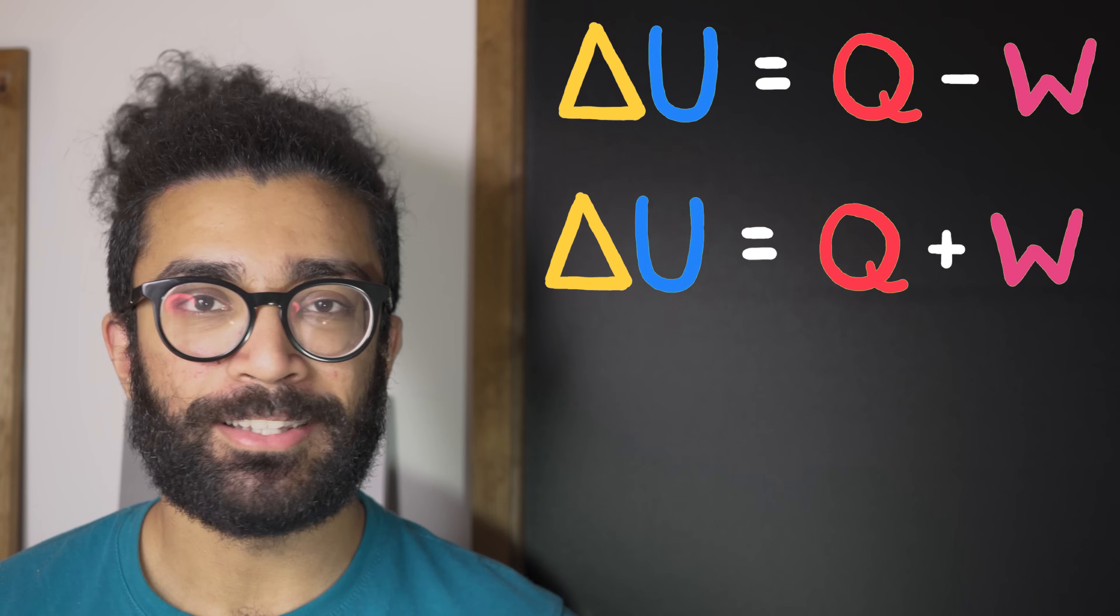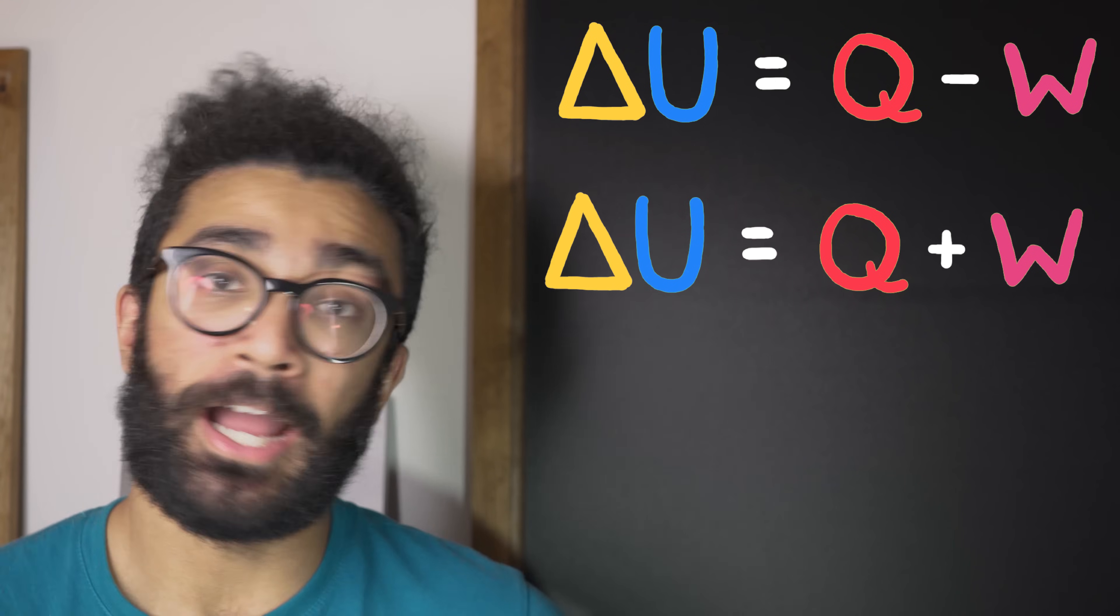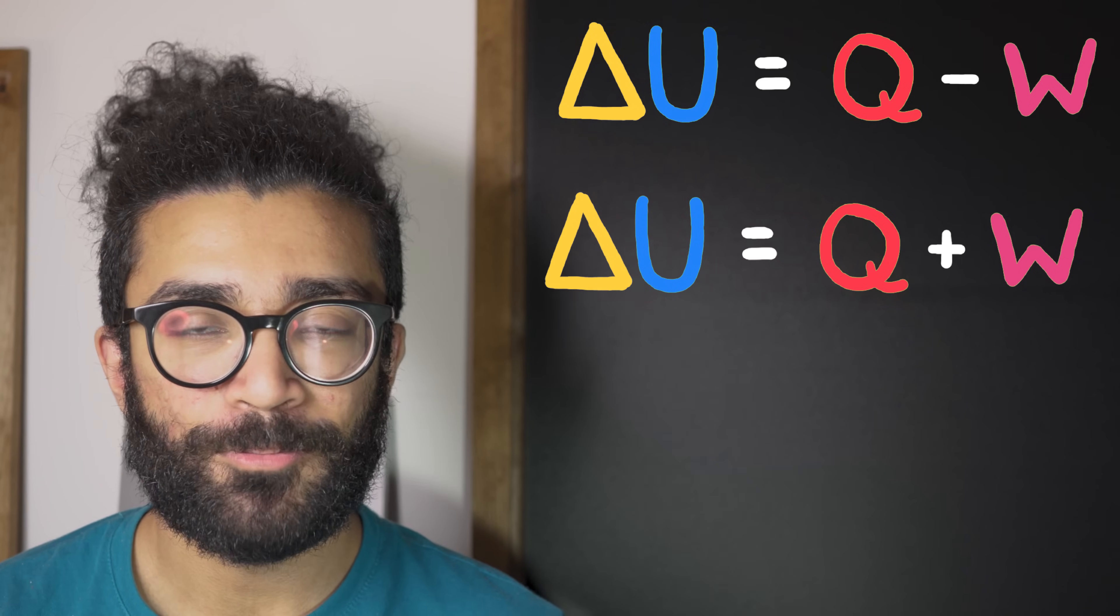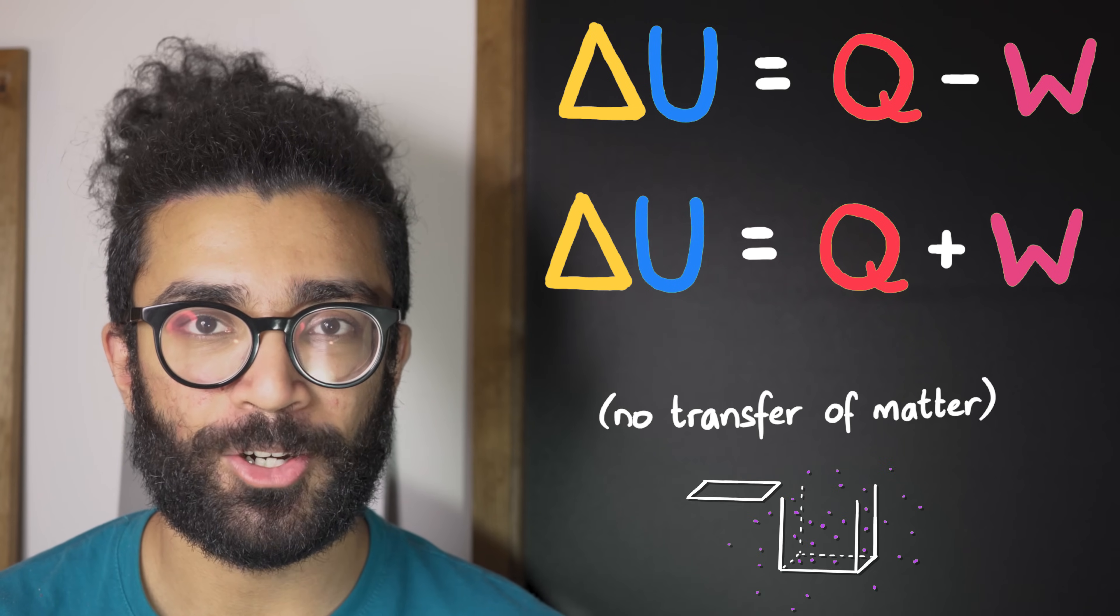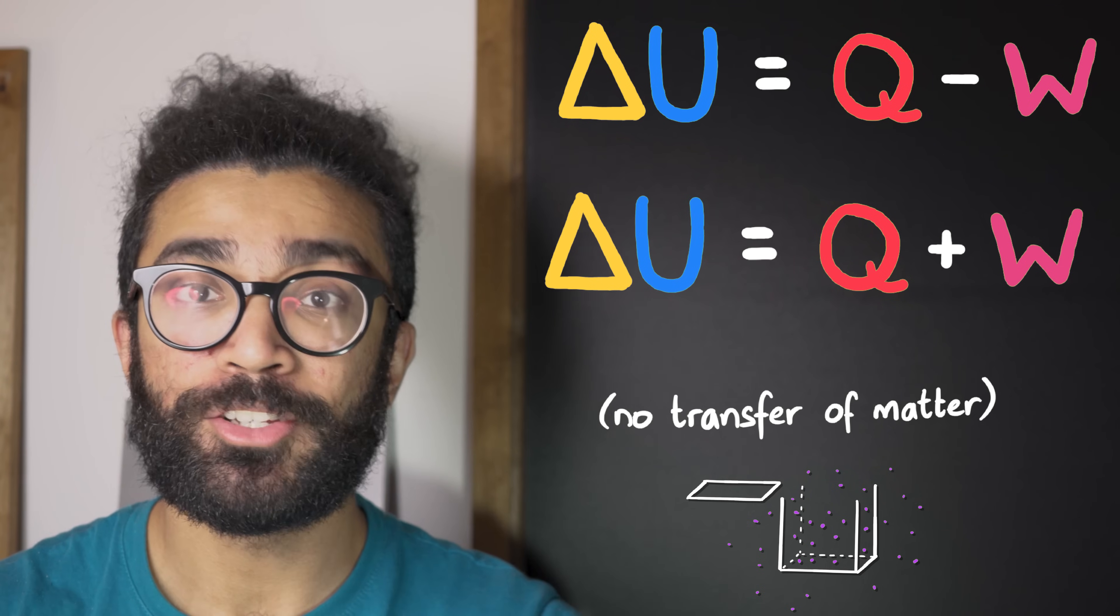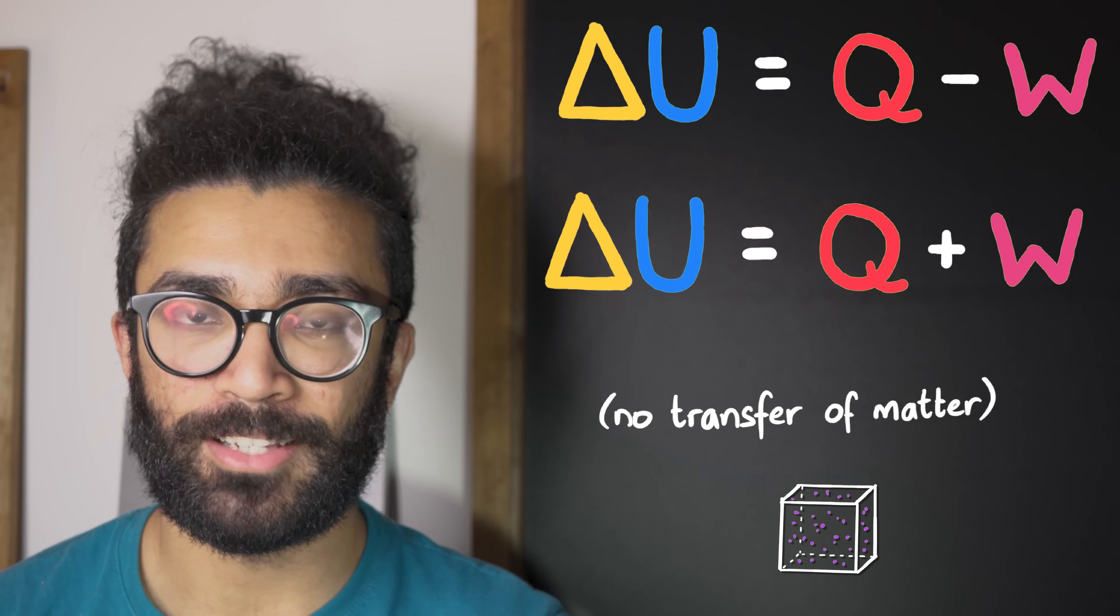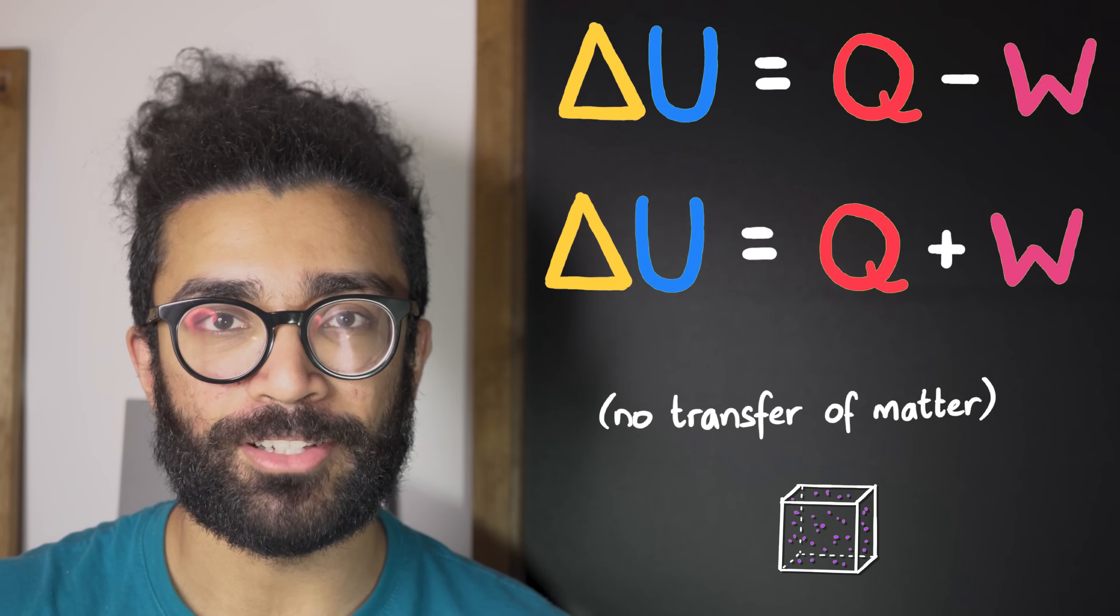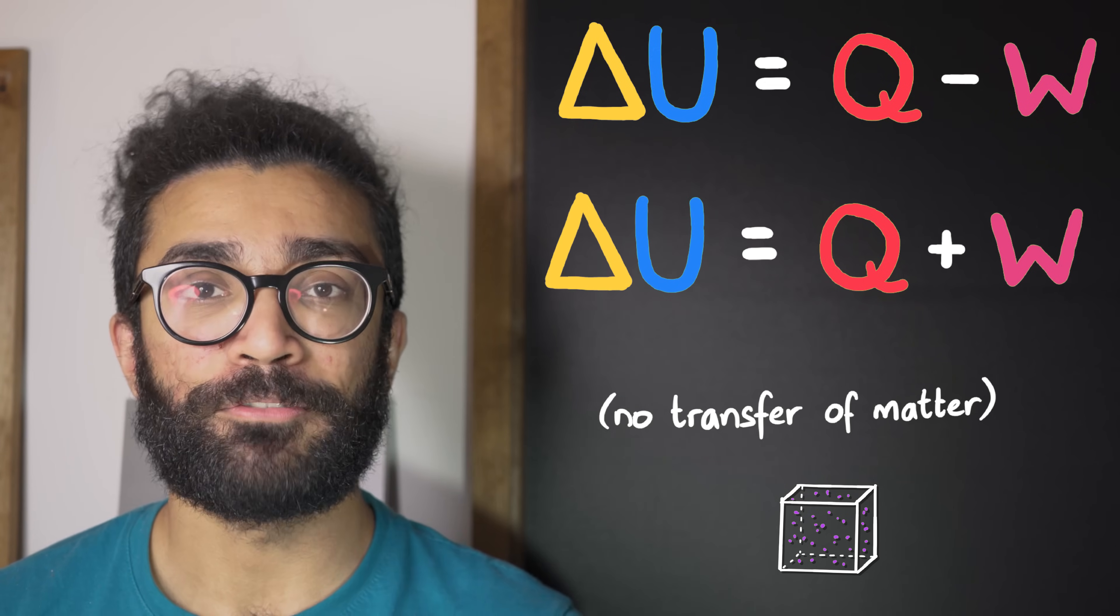Now, it's important to note that this way of writing the first law, either convention, only works if we assume that there is no transfer of matter to or from the system. In other words, we're assuming that no particles of gas in this particular case leave our system or enter our system, because if this were to happen,